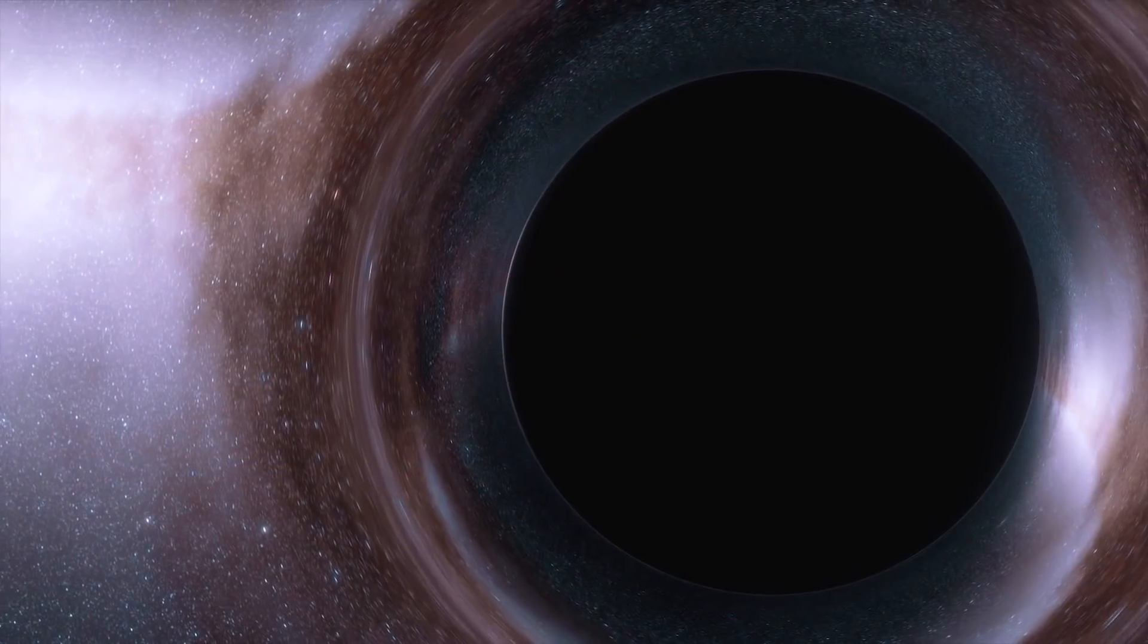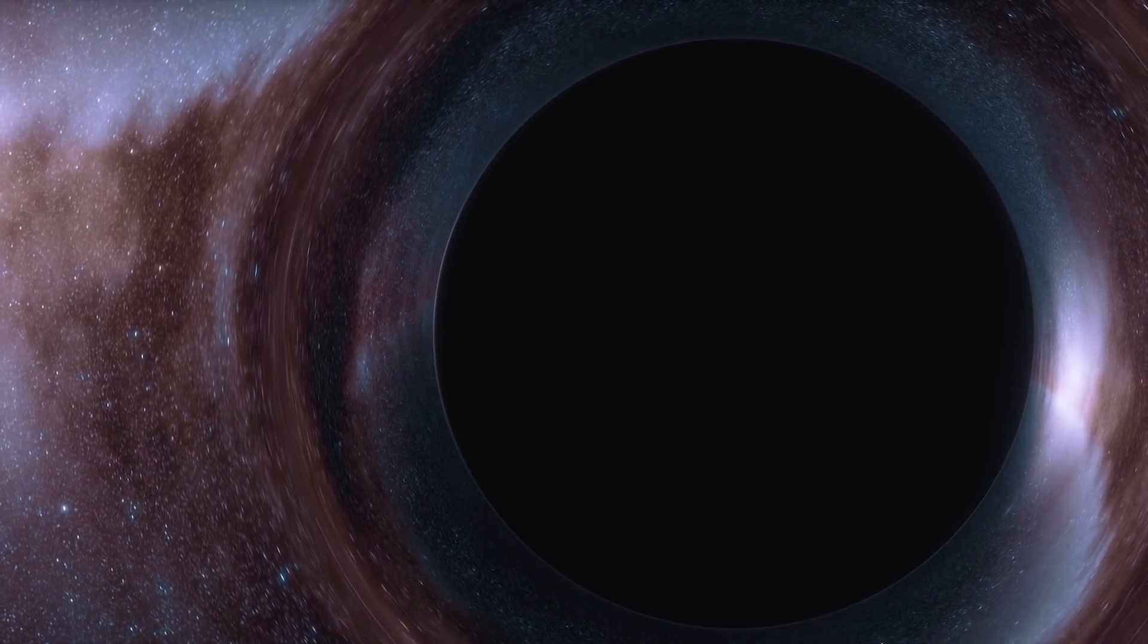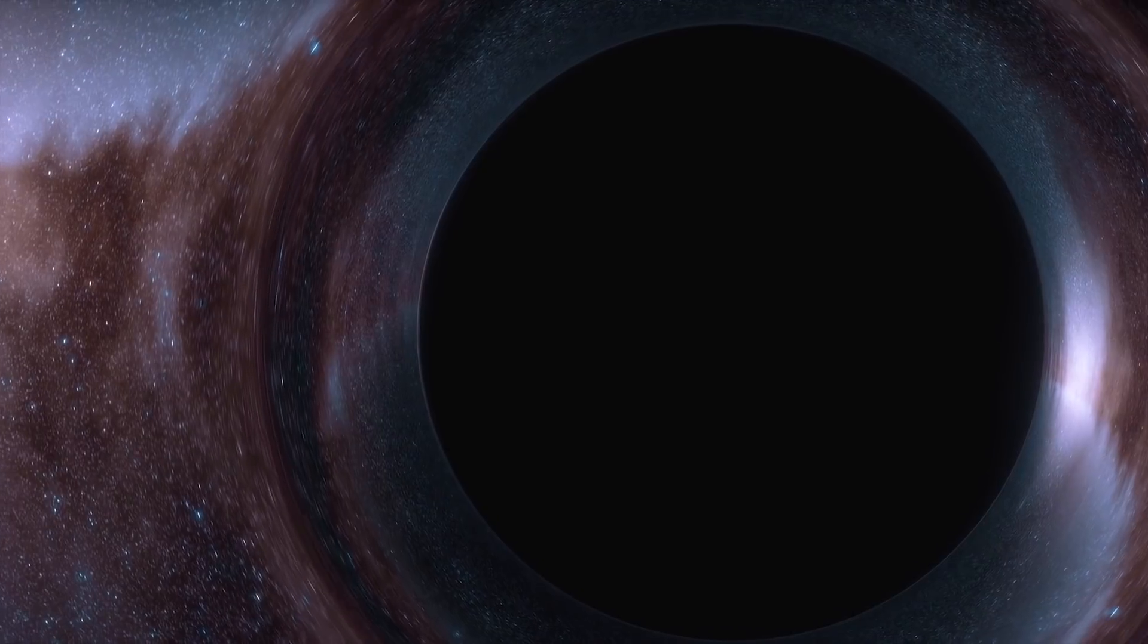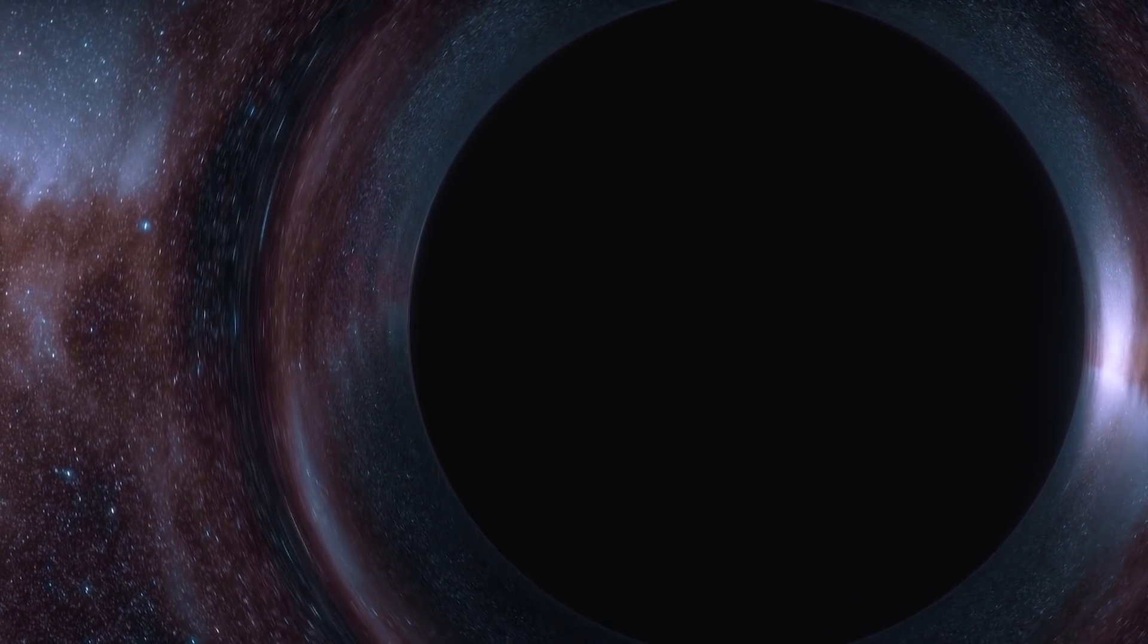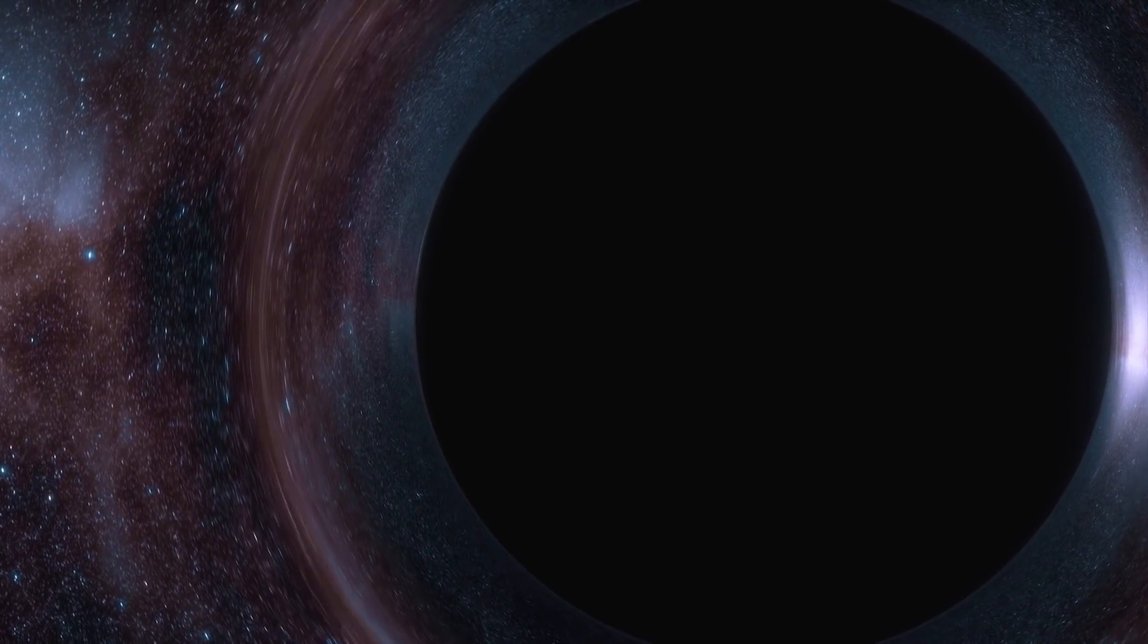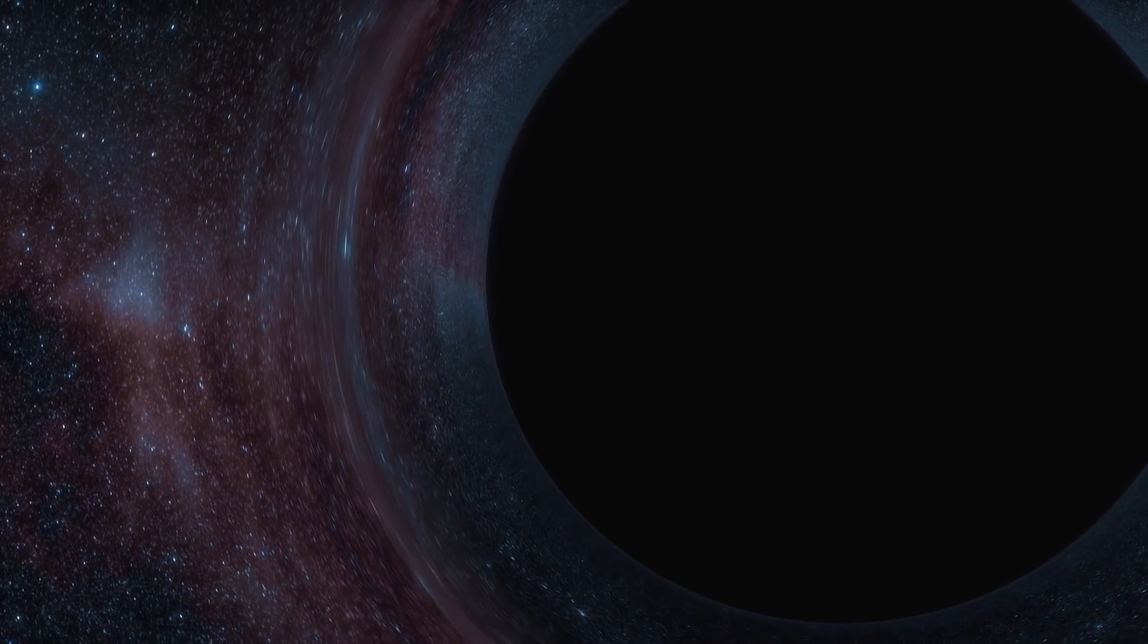The report by the team of researchers found some interesting details about the mystery object. According to them, the object is in a state somewhere between having a surface like a star and being a complete vacuum like a black hole. The mass of the object is also in a strange state, with the mass being between the lightest black holes and the heaviest neutron stars.